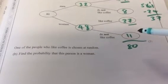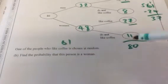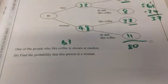Then it says one of the people who like coffee, that was the 61, is chosen. What's the probability that that person is a woman?